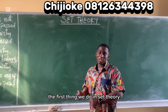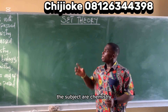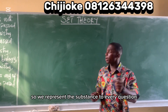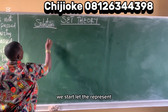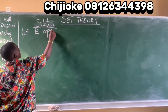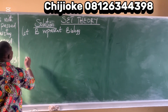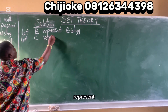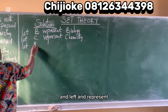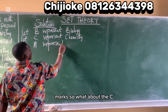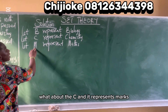The first thing we do in set theory — representation of sets using Venn diagrams — is to represent our subsets. We have three subsets: chemistry, mathematics, and biology. Let B represent biology, let C represent chemistry, and let M represent maths.